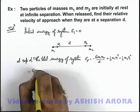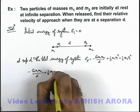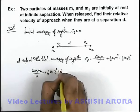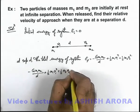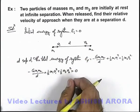minus G m1 m2 by d plus half m1 v1 square plus half m2 v2 square, this should be equal to zero, as initial energy when they were at infinite separation was zero.